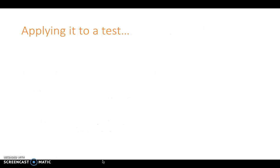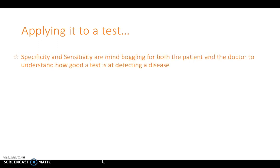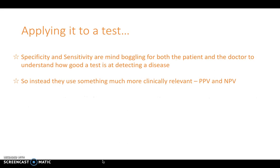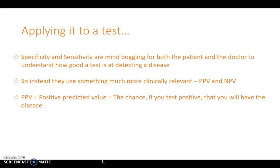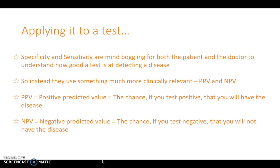Sensitivity and specificity are not very useful for clinicians and patients to understand directly, so doctors use positive predictive values (PPV) and negative predictive values (NPV), which are much more clinically relevant. A PPV is the chance that if you test positive, you actually have the disease. An NPV is the chance that if you test negative, you do not have the disease. These are much easier numbers for clinicians and patients to manage when assessing how good a test is.